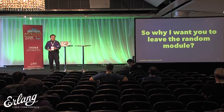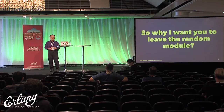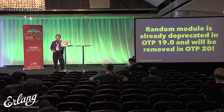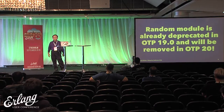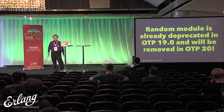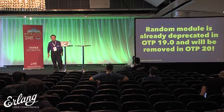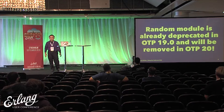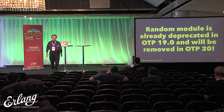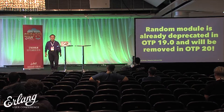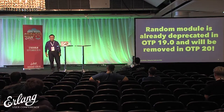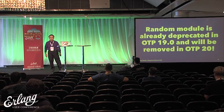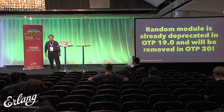Why do I want you to leave the random module? Because the module is already deprecated in OTP 19.0. When you try to compile the random module, you will see a warning message. It will be removed from OTP 20, which is coming — Kenneth said June 2017, as I remember. So our time is running out, and so is yours. Start your migration now, if you're planning.